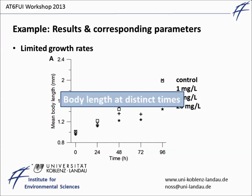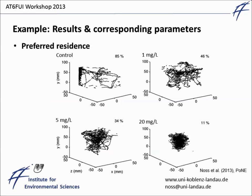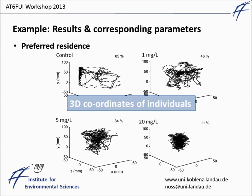Please note and keep in mind that one has to precisely measure the body length at distinct times to estimate the growth rate. Immediately after application we saw a very clear difference in behavior. You can see here the pathways of 10 individuals in each treatment. The percentages at each subplot denote the residence and vicinity to the walls of the tank. The pathways and the percentages show that higher-exposed animals swim more in the central region of the tank. For such an analysis one needs the coordinates of all Daphnia positions at every time step.